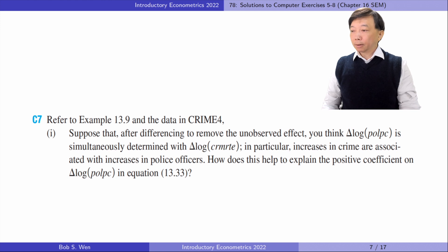It is an example of simultaneous causality. The government deploys more police officers to counties with a higher crime rate. It explains a positive relationship between the crime rate and the number of police officers per capita.